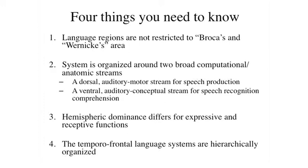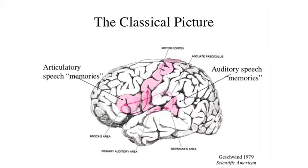Starting with the classical picture: this is a cartoon from Norman Geschwind's 1979 Scientific American article identifying Broca's area and Wernicke's area in the left hemisphere with connections between them. Auditory information comes in, connects to Wernicke's area where comprehension happens. Speech programming happens in Broca's area, which outputs into motor cortex — that's basically the whole system according to this classical view.